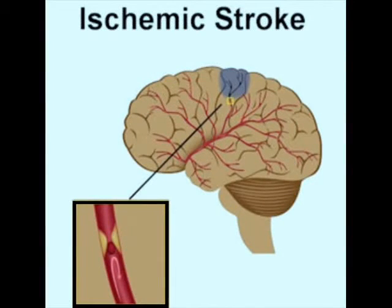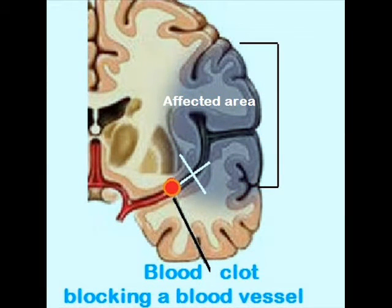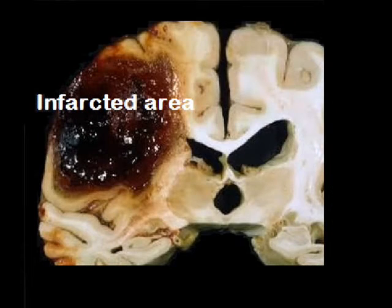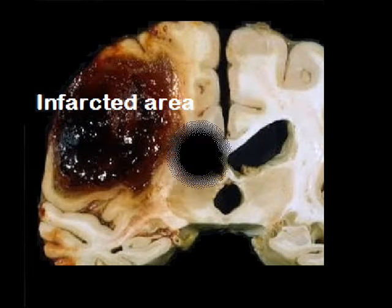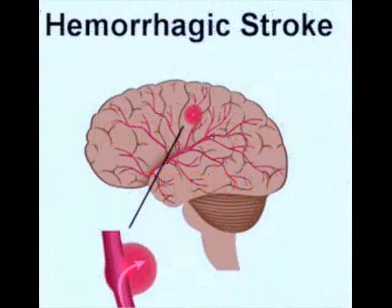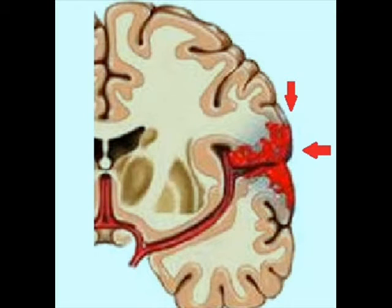The most common type of stroke is ischemic stroke, which occurs due to a clot blocking a blood vessel. Less common is hemorrhagic stroke, which occurs due to rupture of a blood vessel. In ischemic stroke, there will be a clot in the blood vessel which blocks the blood flow, causing that part of the brain to undergo hypoxia and ischemia. Brain cells cannot survive without oxygen, so they begin to die.